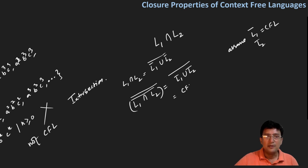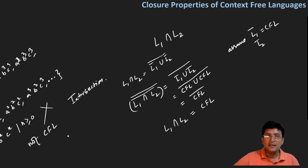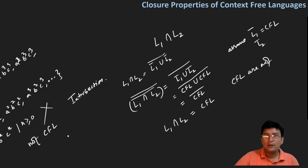If that assumption holds, then L1 complement union L2 complement would also be context-free, because context-free languages are closed under union (as shown in a previous lecture). But we already proved that context-free languages are not closed under intersection, which contradicts our assumption. Therefore, our assumption that complementation is closed for context-free languages is wrong. We can now state that context-free languages are not closed under complementation.